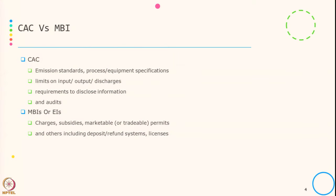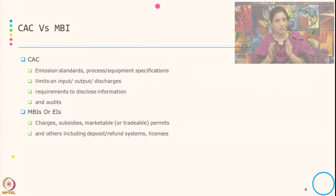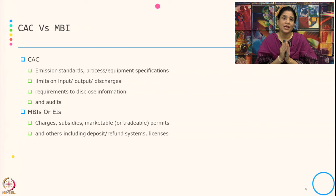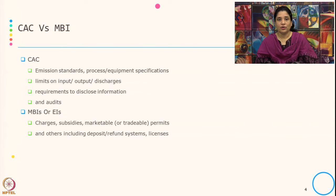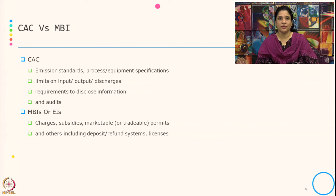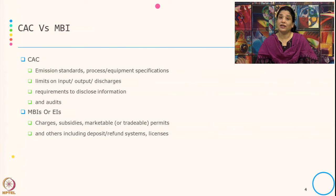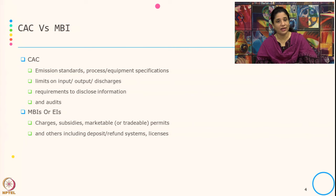Now let us see the difference between the command and control approach (abbreviated as CAC) and the market-based instrument (abbreviated as MBI). CAC includes: emission standards, process and equipment specifications, limits on input/output/discharge, and requirements to disclose information and audit. MBI includes: emission charges, subsidies, tradable or marketable permits, and deposit refund systems and licenses. A typical example of an emission standard is the Euro 6 or Bharat 6 standard for vehicles.